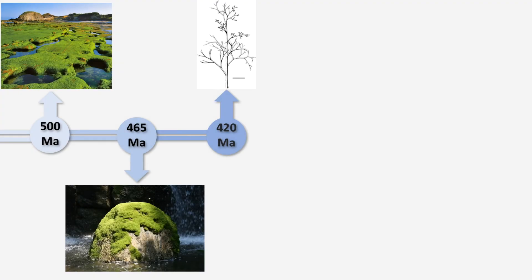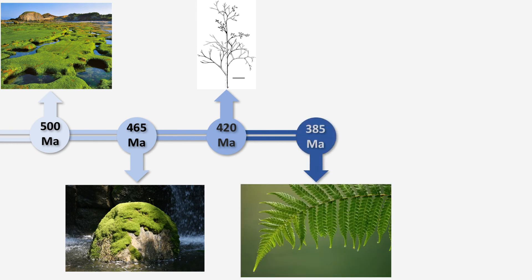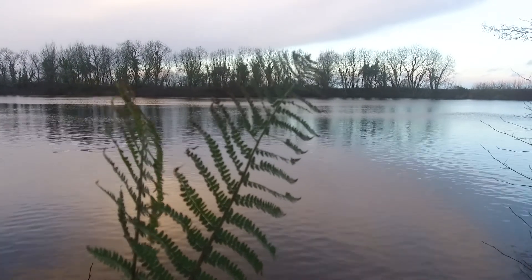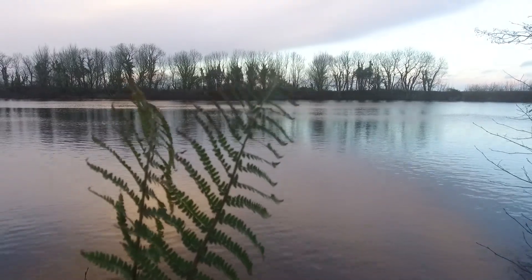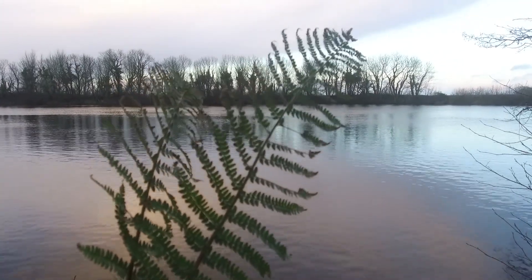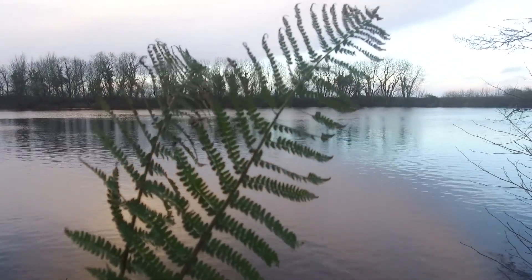Capable of growing to greater heights and dispersing spores to greater lengths, primitive vascular plants such as xylophyton acted as simple stepping stones to reach more successful seedless vascular plants such as ferns.